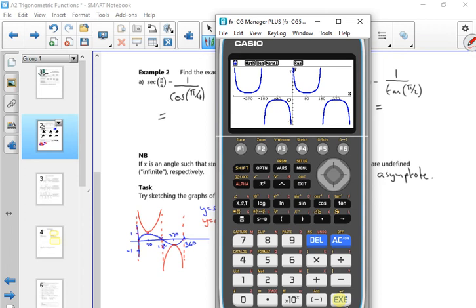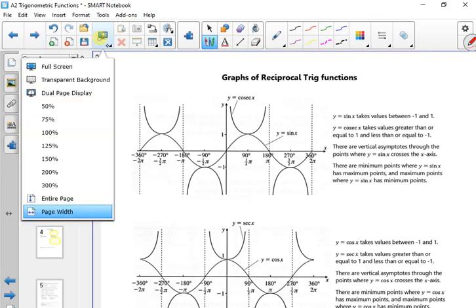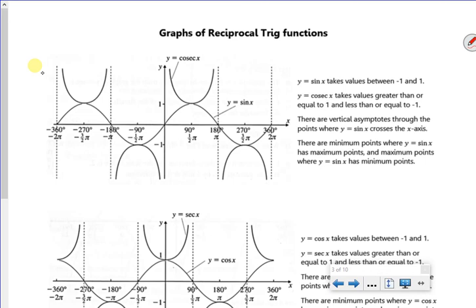There you go. So you can see where the asymptotes are, can't you? Like 0, and minus 180, and minus 360, and 180, and 270. So you can graph them all. And the next page has got all the graphs on it and shows you where the asymptotes are.